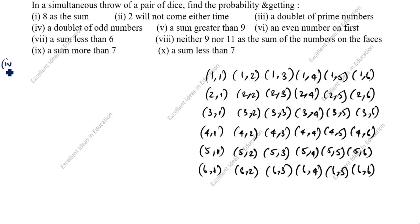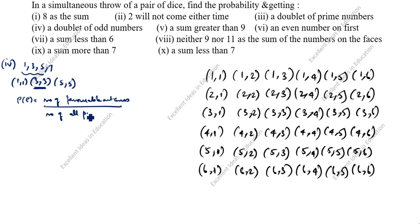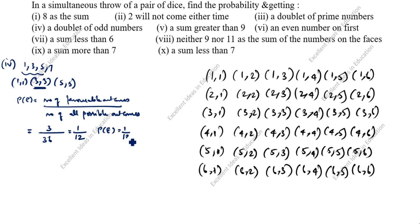Fourth question: a doublet of odd numbers. The odd numbers up to 6 are 1, 3, and 5. So the favorable doublets are (1,1), (3,3), and (5,5) — 3 outcomes. P(E) = 3/36 = 1/12.